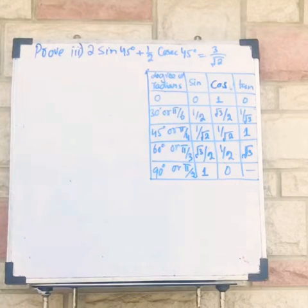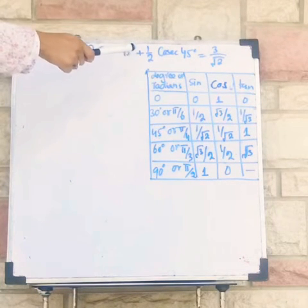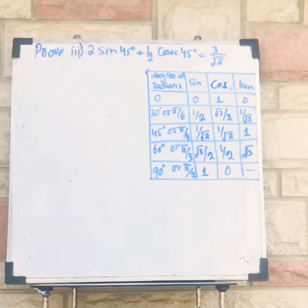Guys, right now I have to tell you about proof of third portion of identity which is 2 sin 45 degrees plus 1 by 2 cosecant 45 degrees is equal to 3 divided by under root 2.